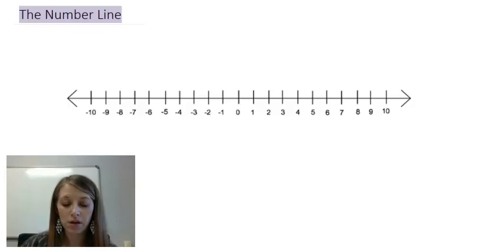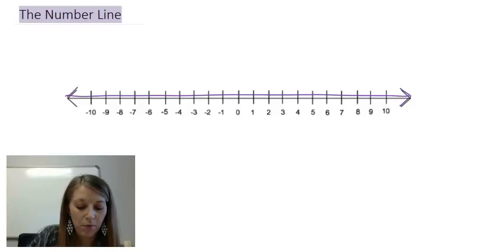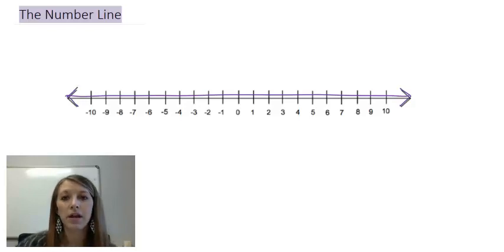I don't need to see all the tick marks with all the numbers, but I do need to see just a basic line with arrows in both directions, because the number line does go forever in both directions.